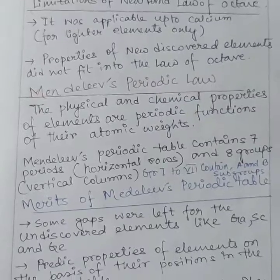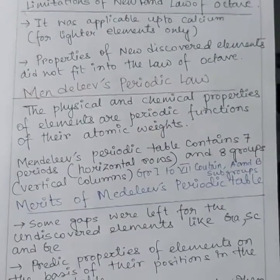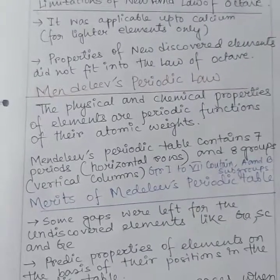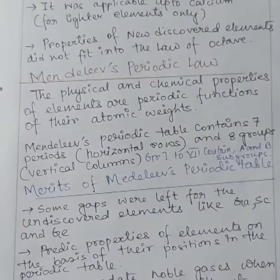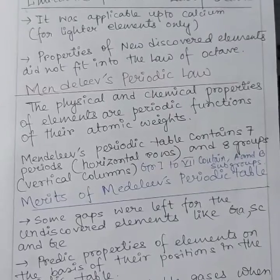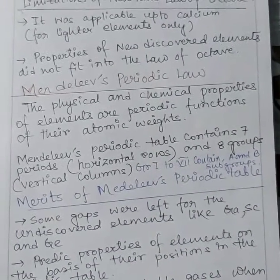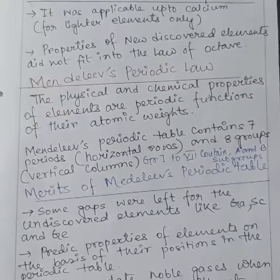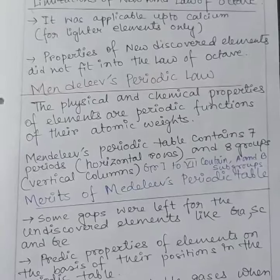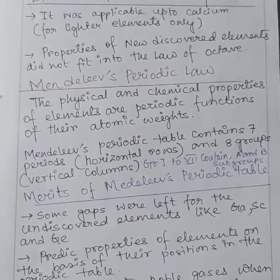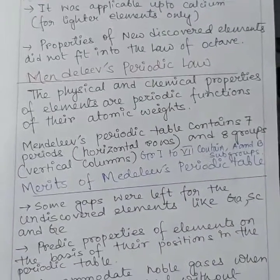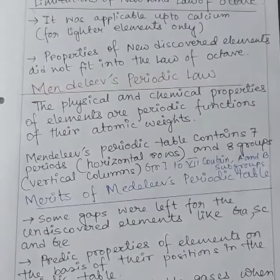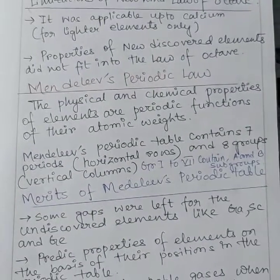The merits of Mendeleev's periodic table: gaps were left for undiscovered elements such as gallium, scandium, and germanium. These were named Eka-boron (scandium), Eka-aluminium (gallium), and Eka-silicon (germanium) — these three names are very important for exams. Another merit is that it predicted periodic properties of elements based on their position, and it accommodated noble gases when they were discovered without disturbing the original arrangement.